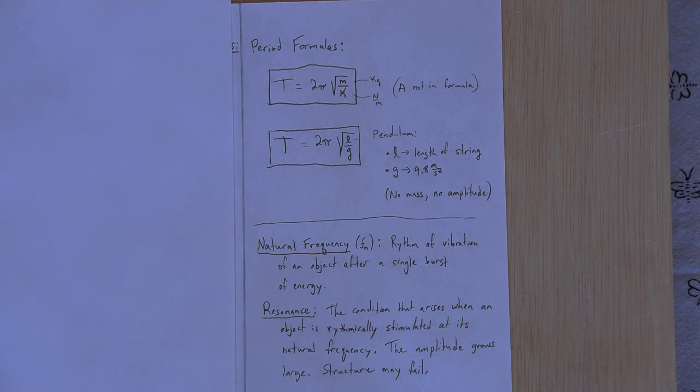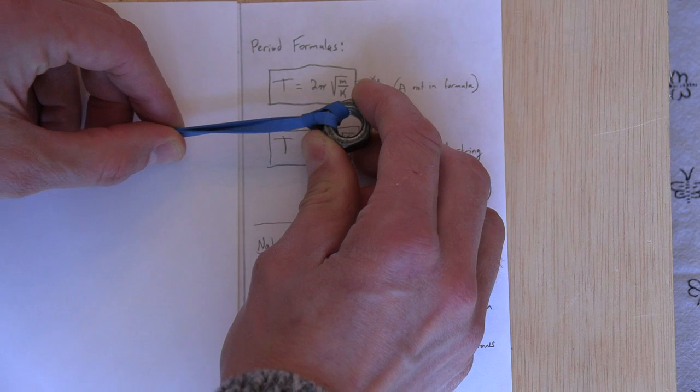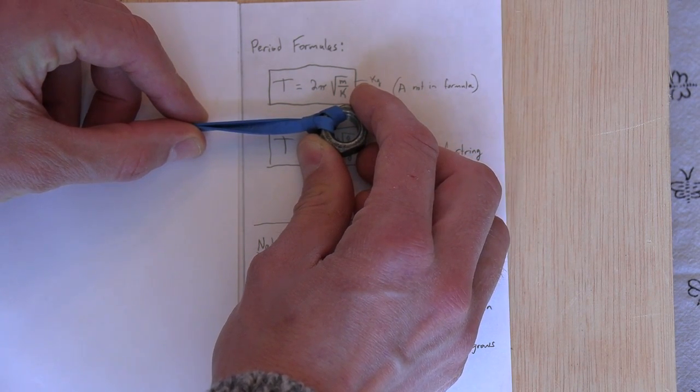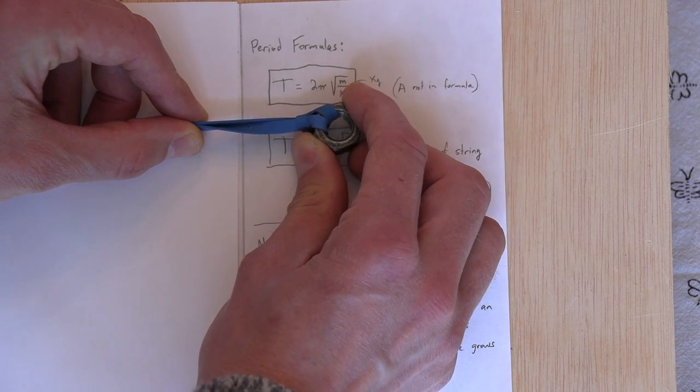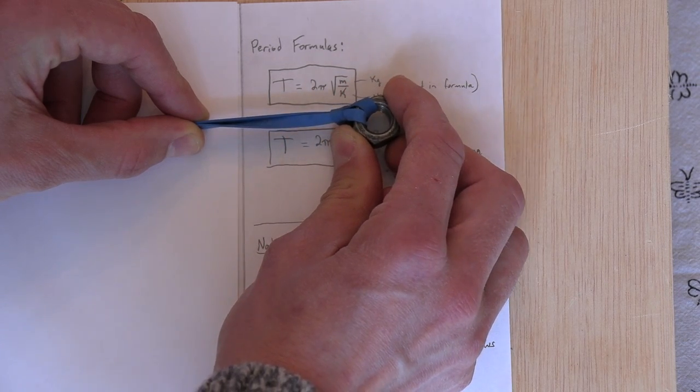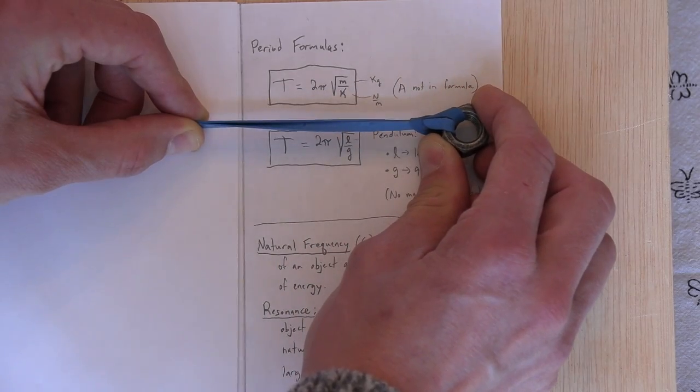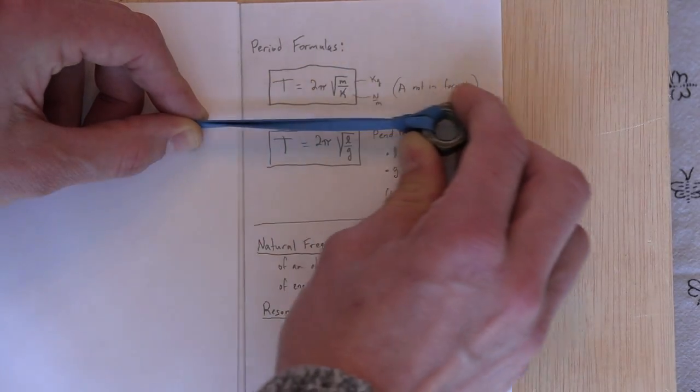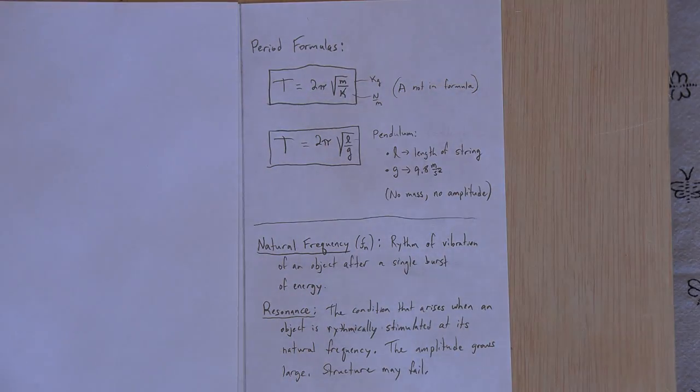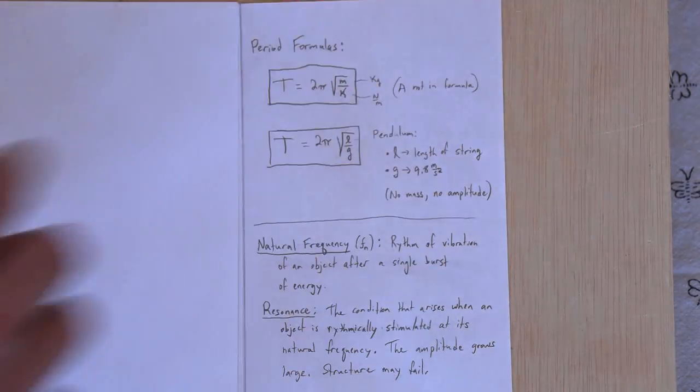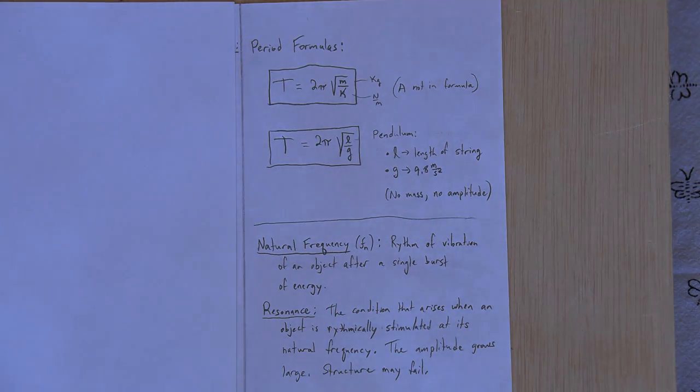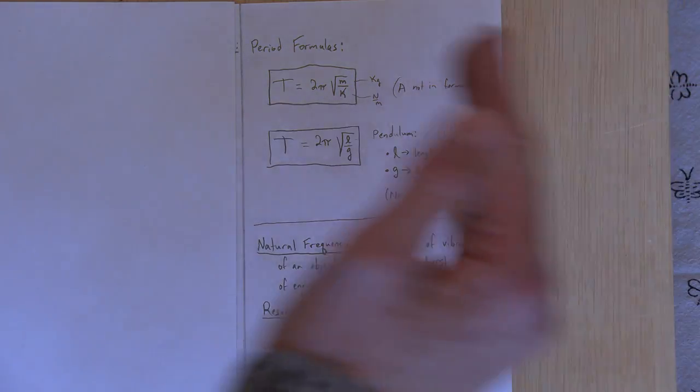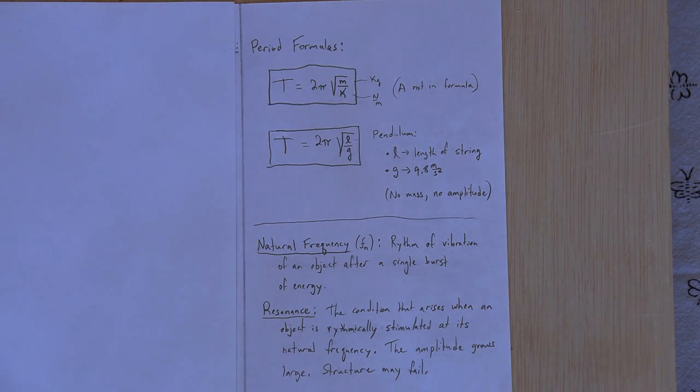So that is the formula. But interestingly, notice amplitude is not in the formula. In the classroom I would have a car on a spring, and I would show you that if I oscillate with a small amplitude, and then I do a large amplitude, and you would see with a stopwatch, even though I made the amplitude larger, the time would come out to exactly the same as a small amplitude. Counterintuitive. You would think the bigger oscillation should have a longer period because it has more distance to travel, and it does not turn out to be the case in simple harmonic motion.